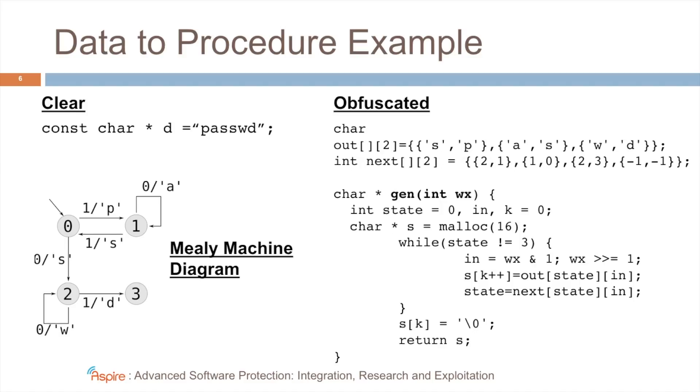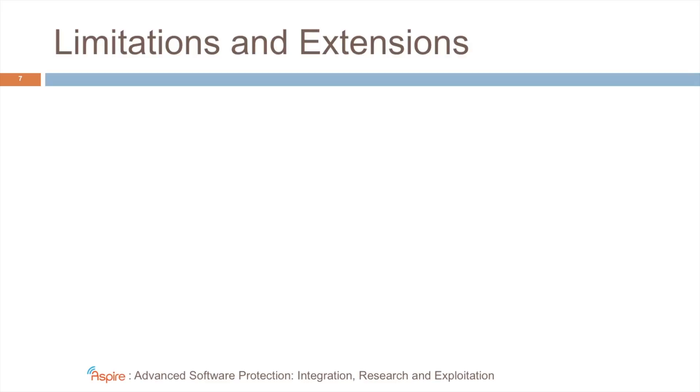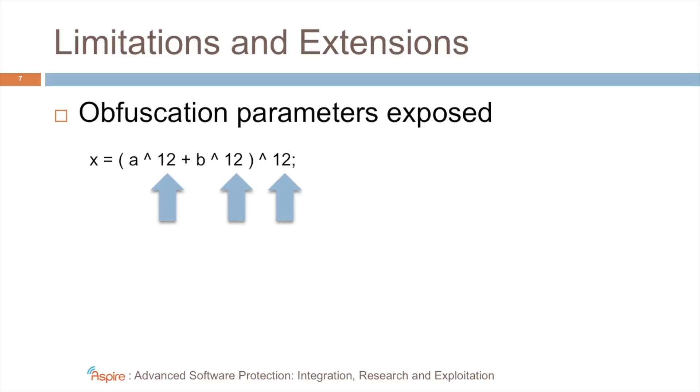Now, unfortunately, these protections come with some limitations, so we need to extend them. One of the problems is that the obfuscation parameters are exposed. You can see this in this XOR masking example. Here, an original expression, A plus B, is rewritten into this more complex expression. But in the complex expression, you see all the constants of your masking operation. So it's very easy to reverse engineer this.